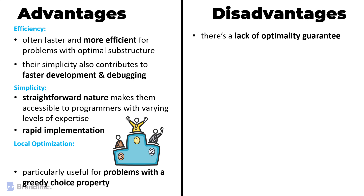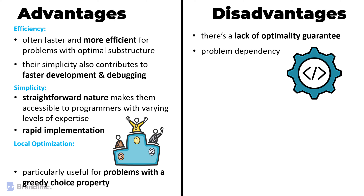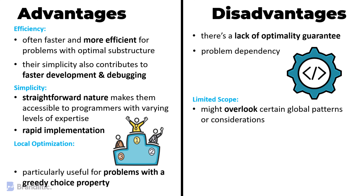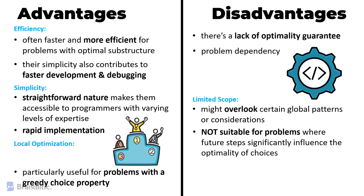The disadvantages of greedy algorithms: First, there is a lack of optimality guarantee — one of the major drawbacks is the absence of a guarantee for a global optimal solution. Second, problem dependency — the effectiveness of greedy algorithms heavily depends on the nature of the problem, and that is a significant drawback. Third, limited scope — greedy algorithms might overlook certain global patterns or considerations, and they are not suitable for problems where future steps significantly influence the optimality of choices.